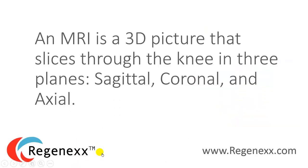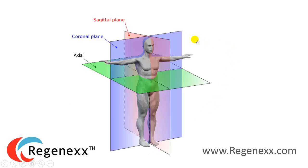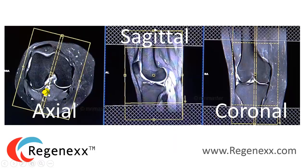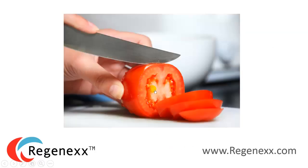An MRI is a 3D picture that slices through things, and there are three planes: sagittal, coronal, and axial. The coronal plane is the front plane, the sagittal plane is the side plane, and the axial plane is looking from the top or bottom — essentially cutting you in half. On your MRI, just remember that you're slicing through a three-dimensional structure.